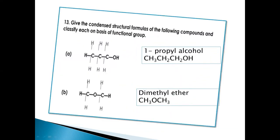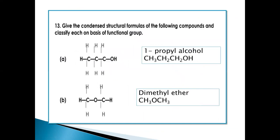We have question number 13. Give the condensed structure formula of the following compounds and classify each on the basis of functional group. We have two options given. This is an OH group. This is three carbon. This is a propyl alcohol. This is the second side.